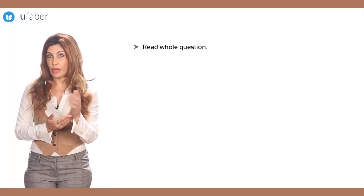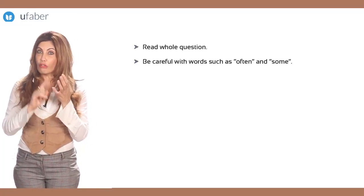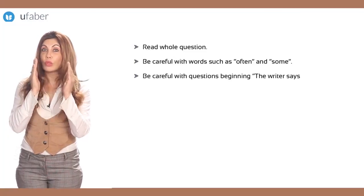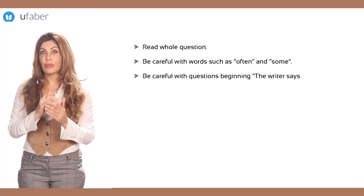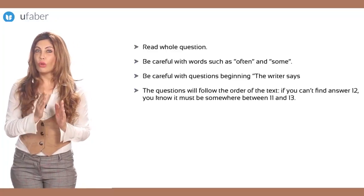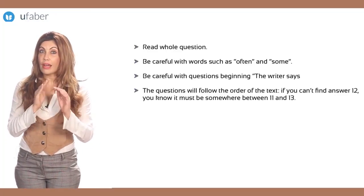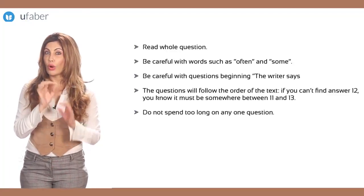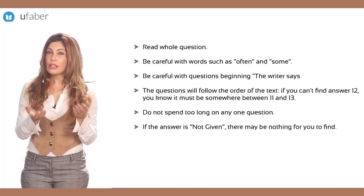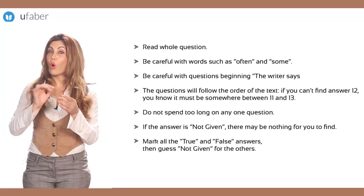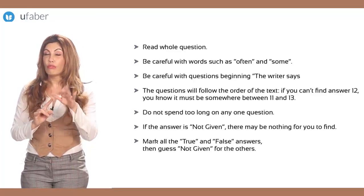Read the whole question. Be especially careful with words such as 'often' and 'some' — they can change the meaning of the question dramatically. Be careful with questions beginning 'the writer says,' as here you need to think about the writer's opinions and not about facts. The questions follow the order of the text. If you can't find answer 12, you know it must be somewhere between 11 and 13. One possibility is to mark all the True answers and all the False answers and then guess Not Given for the others. Let us look at a round-up of all these steps.